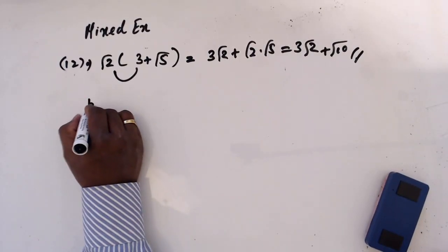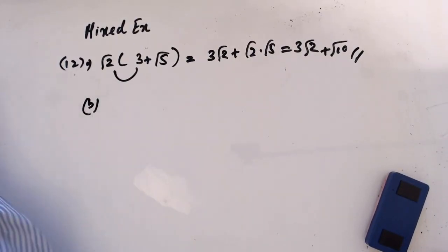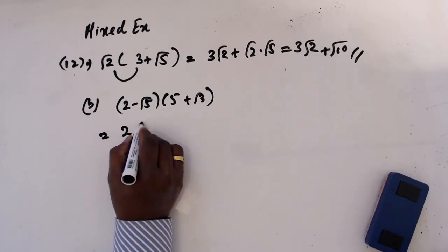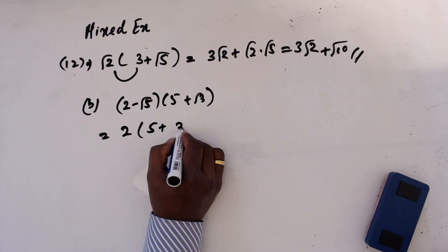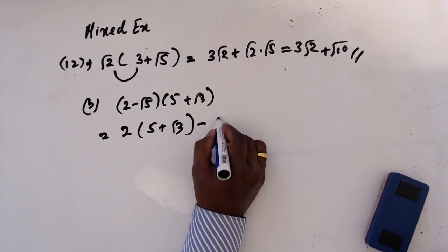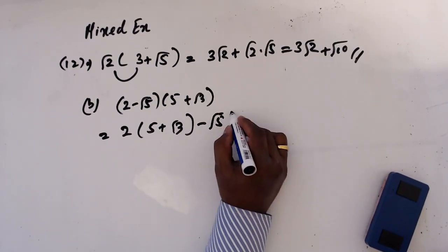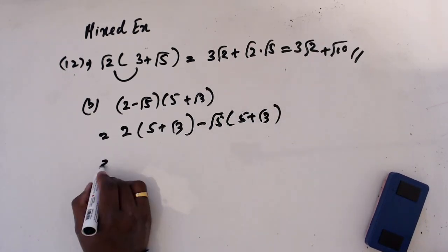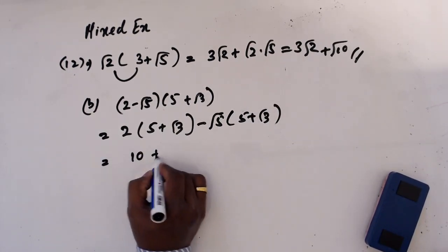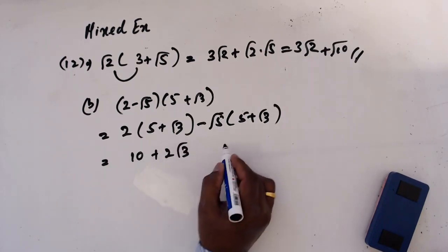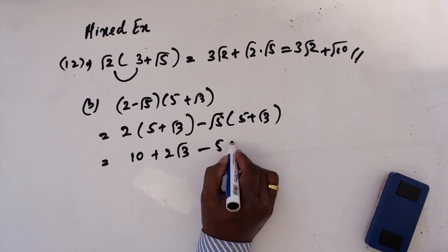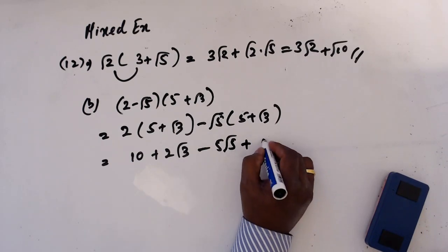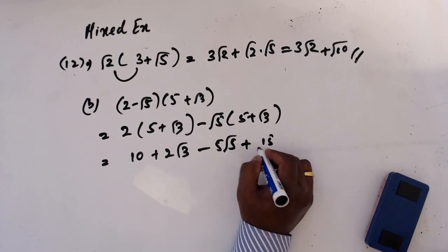Part b: (2 - √5)(5 + √3). This gives 2 times 5 which is 10, then 2×√3 gives 2√3, then minus √5 times 5 minus √15. So this simplifies to 10 + 2√3 - 5√5 + √15.